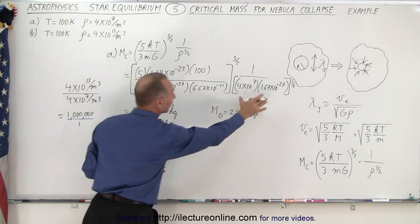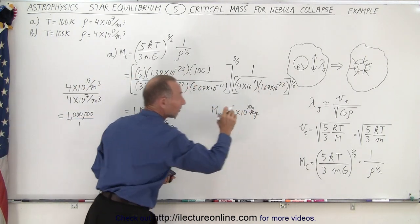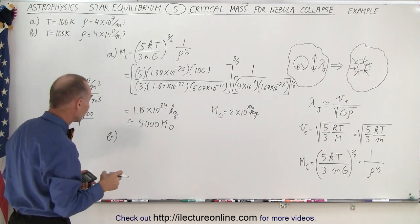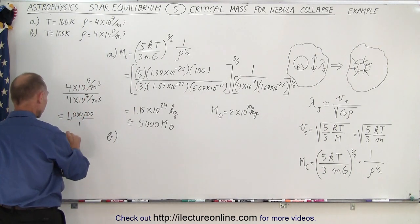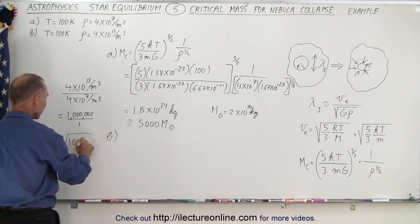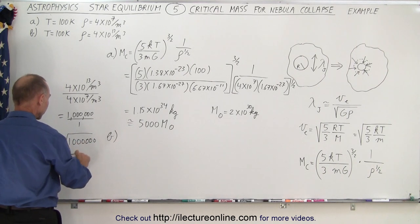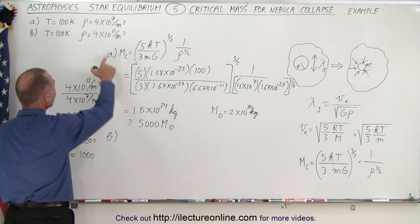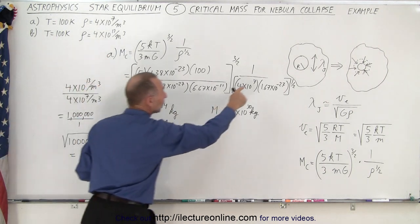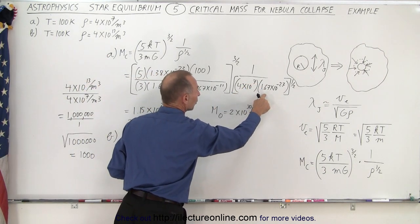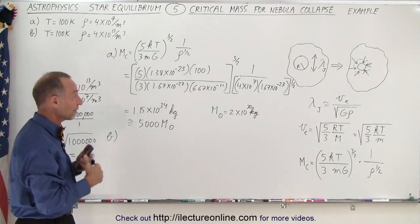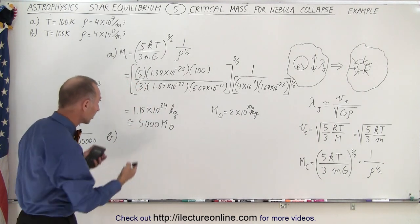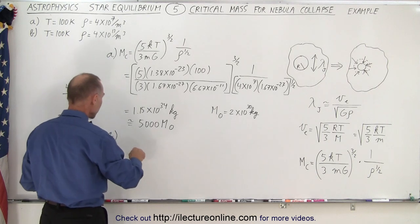Now, if we take the square root of that, because notice we're talking about the density and the density, well, we take the square root of the density in the denominator. So if we take the square root of a million, the square root of one million, we get a thousand. So in other words, with a density which is one million times as great, we now divide by a number which is a thousand times bigger.